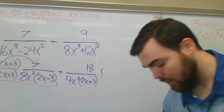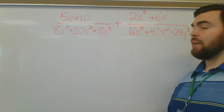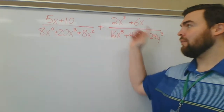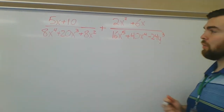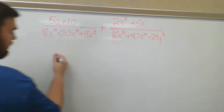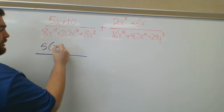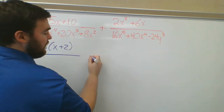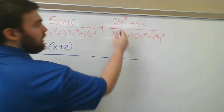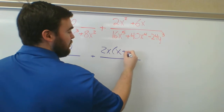Let's look at problem number 2. Go ahead and get this down and try to start factoring on your own. I'm going to rewrite the top part: 5x plus 10 can be factored as 5 times (x plus 2). Top right, 2x can be factored out, leaving x plus 3.